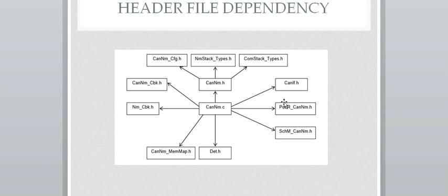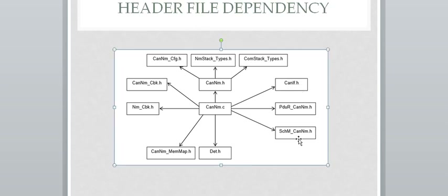Header file dependency: as you can see, this is our CAN-NM.c file, and it has dependencies on these header files — configuration, NM stack, COM stack, CAN-IF.h, PDU, and CAN-NM.h. The CAN-NM.c file has dependencies on all these header files.